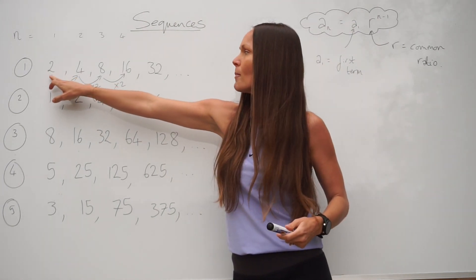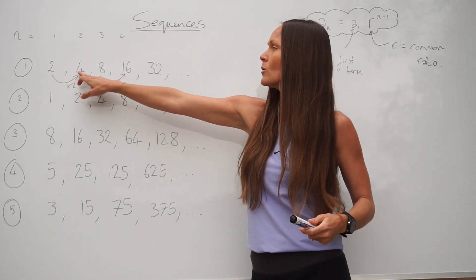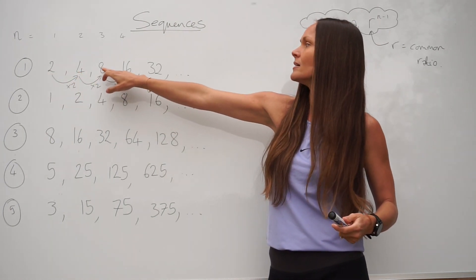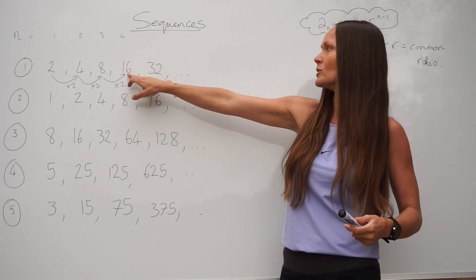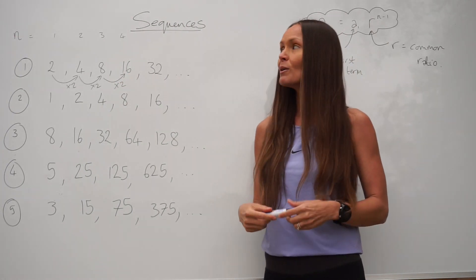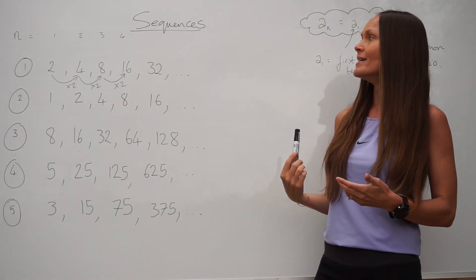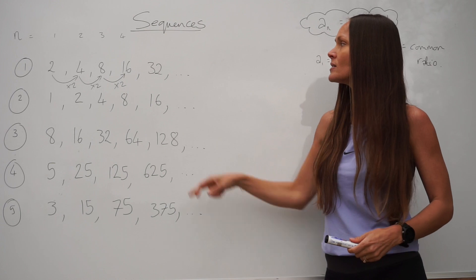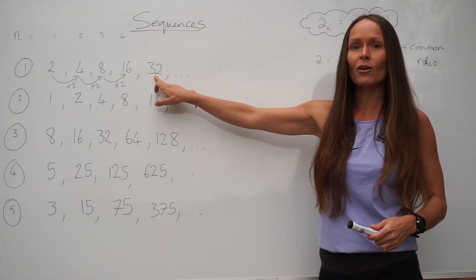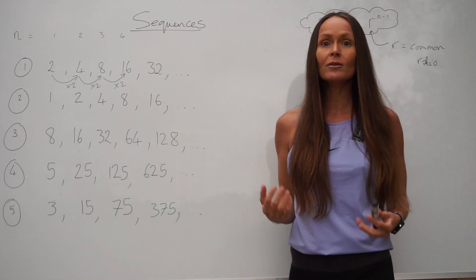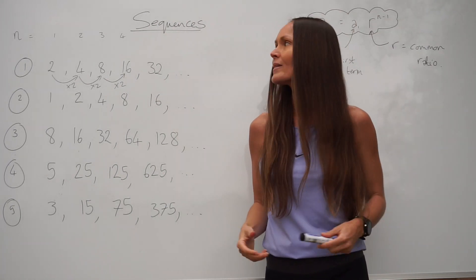So 2 multiplied by 2 is 4, 4 multiplied by 2 is 8, 8 multiplied by 2 is 16 and so on. So if you needed to find the next term in that sequence, you would take 32, multiply it by 2, and it would give you 64.